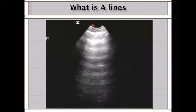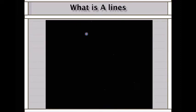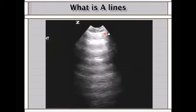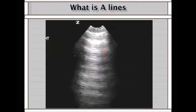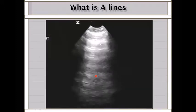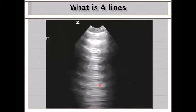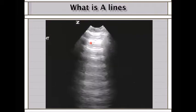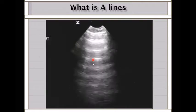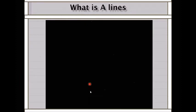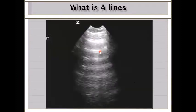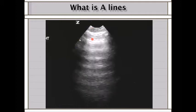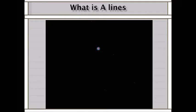On the A-line image you can see the scanner mark at the top, then the skin, then the pleura, and a repetition of the pleura below it. These repetitions are not the lung—we are not scanning lung tissue. We are seeing a repetitive image of the pleura because the pleura contains air. Notice the distance between repetitions is always the same. This is what we call an A line: horizontal repetition of the pleura because the pleura contains air.